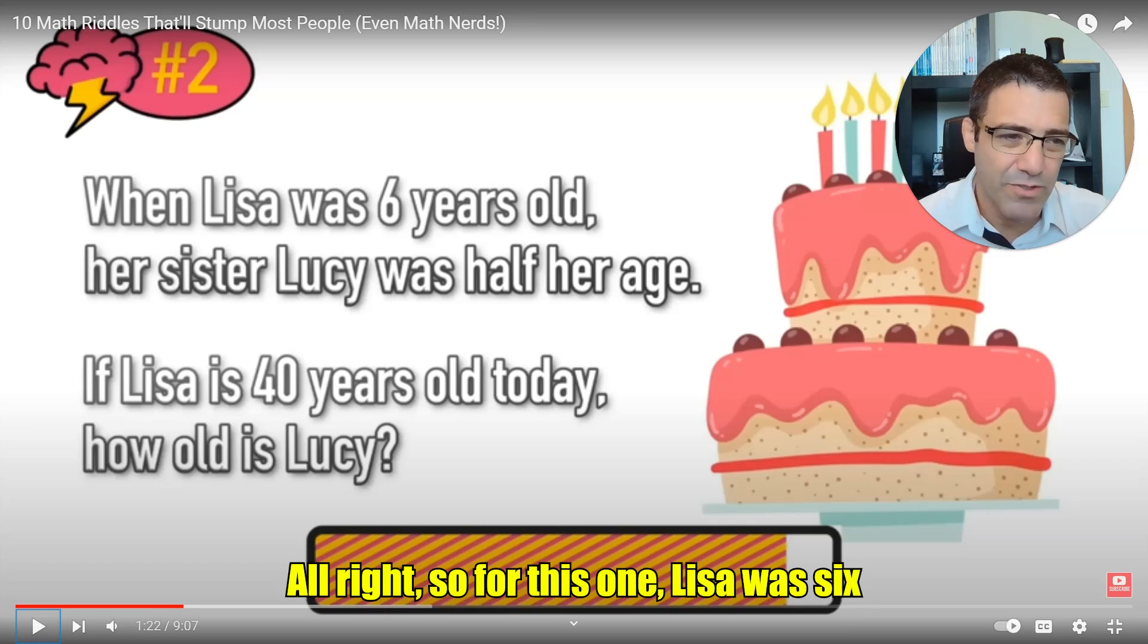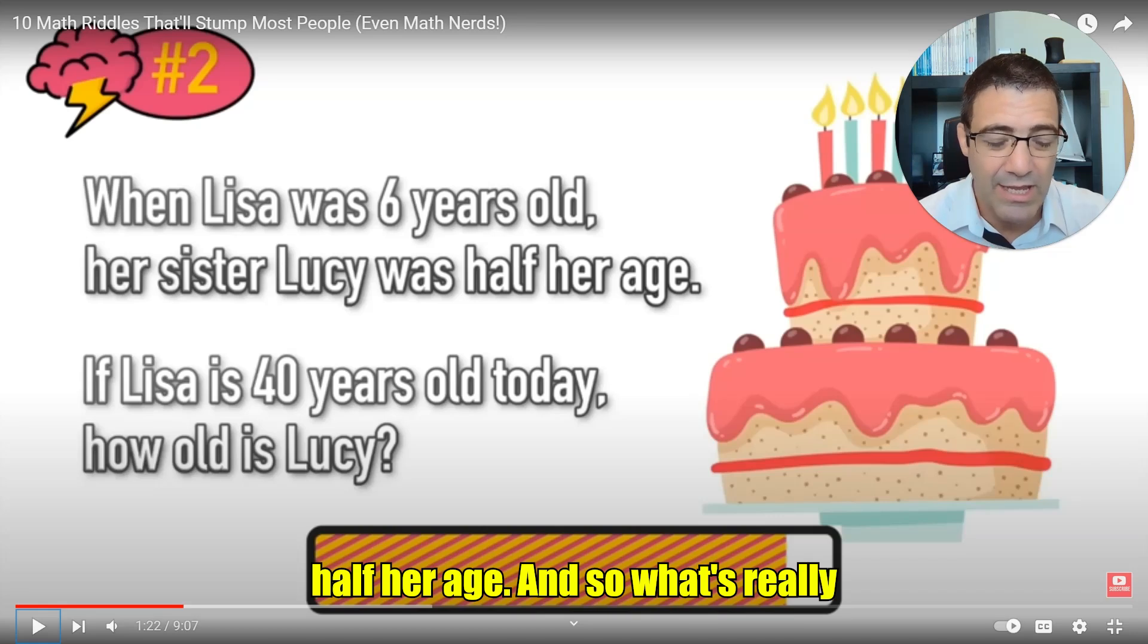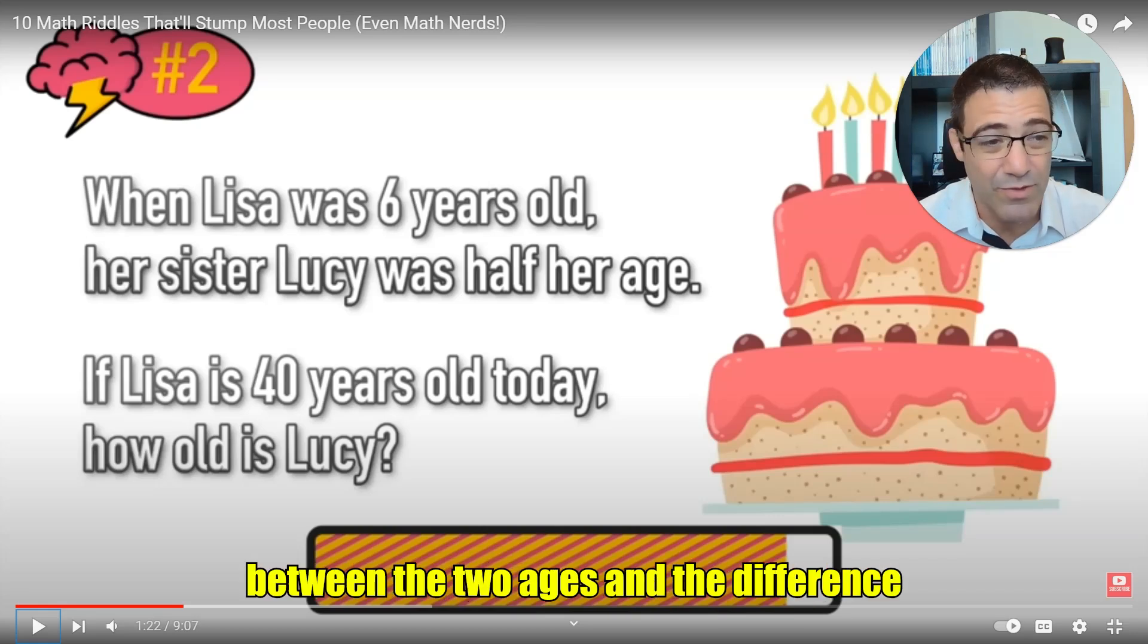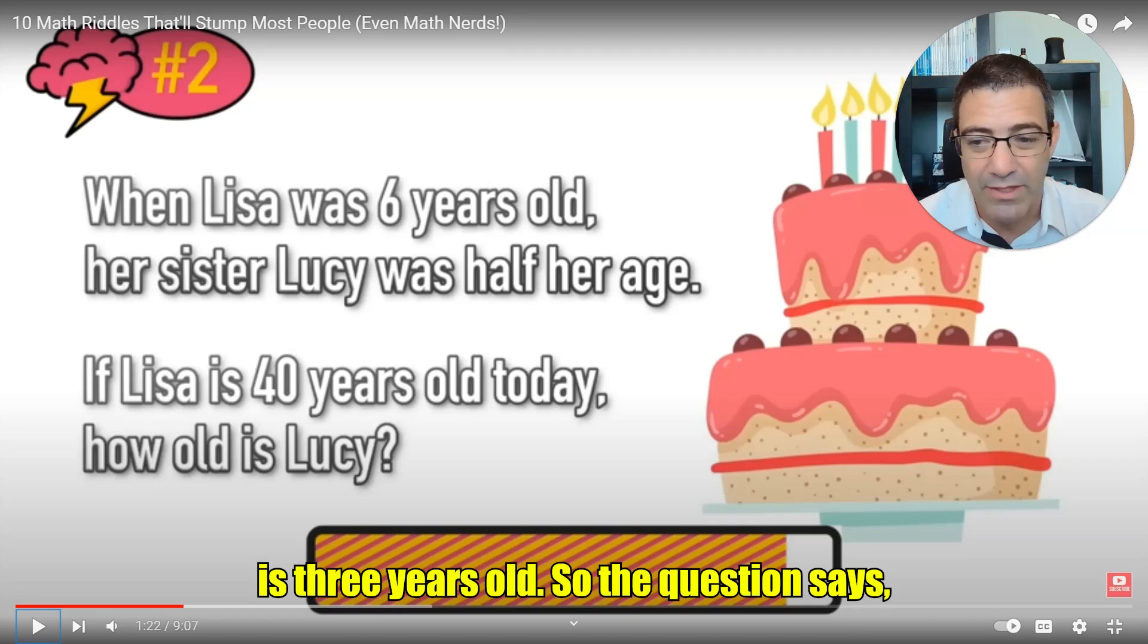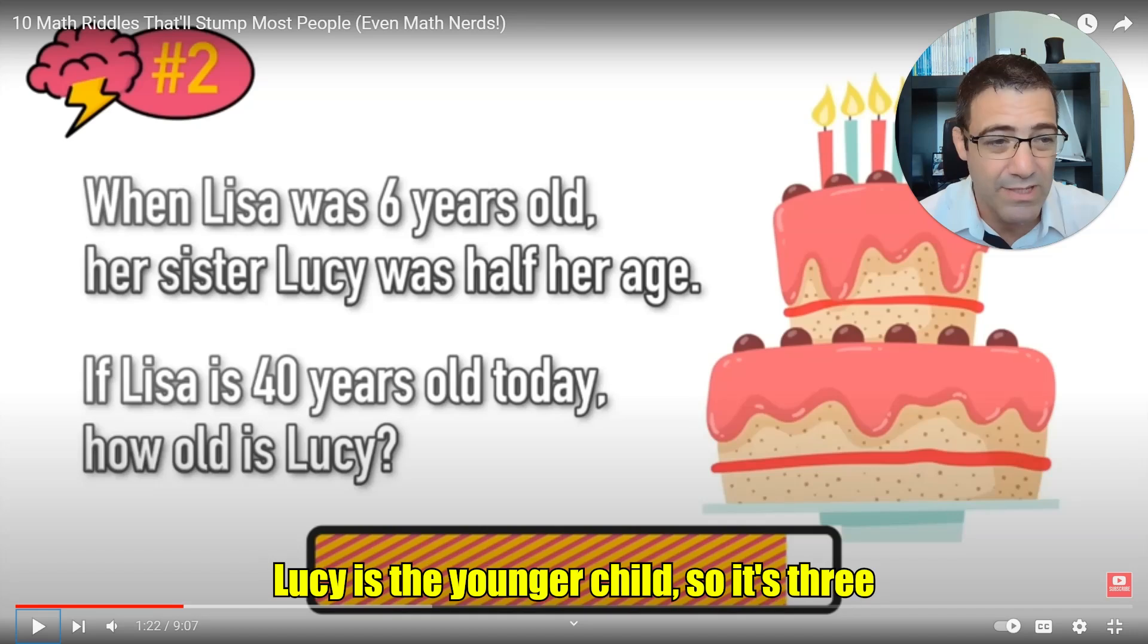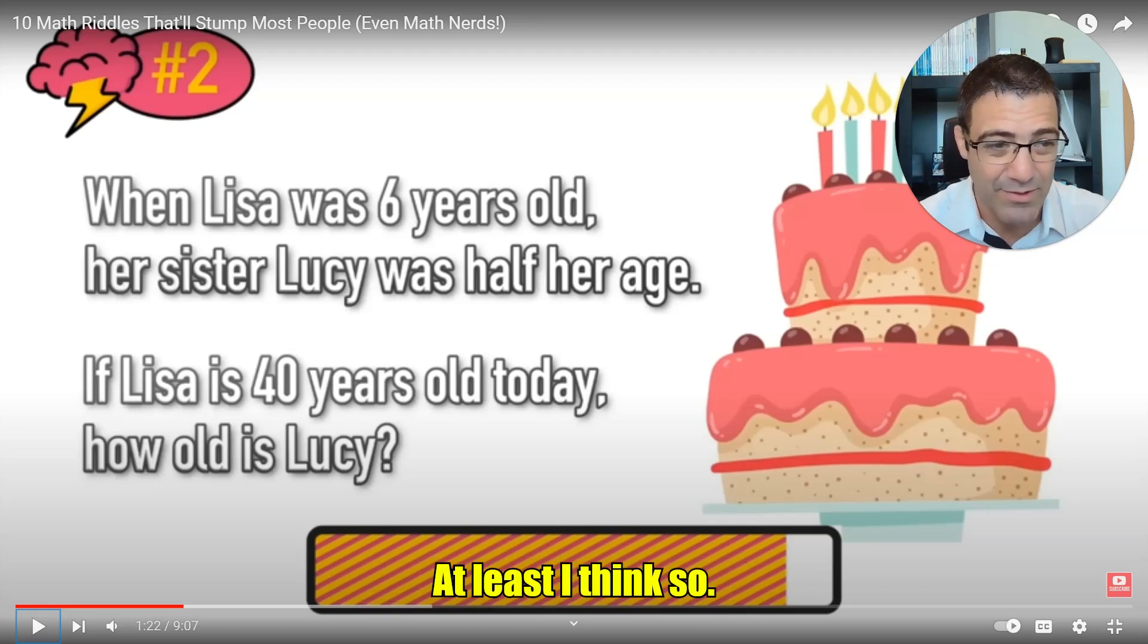All right, so for this one, Lisa was 6 years old. Her sister was 3. She's half her age. And so what's really important, here's the differential between the two ages, and the difference is 3 years old. So the question says, if Lisa is 40 today, how old is Lucy? Now Lucy is the younger child, so it's 3 years less, so 37, right? At least I think so.